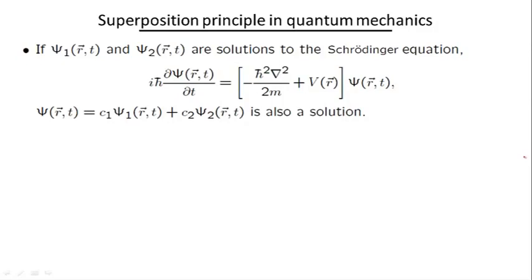This superposition principle simply states that if we have two solutions to the Schrödinger equation, Ψ₁(r,t) and Ψ₂(r,t), their arbitrary linear combination with some arbitrary complex constants C₁ and C₂ is also a solution to this equation.